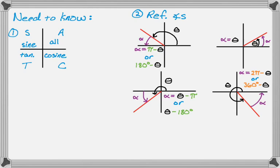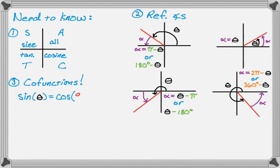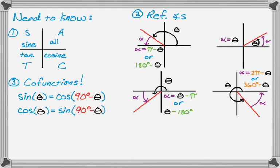So those are the first two things you need to know. Cofunction identities are going to be crucial. The first is that sine of theta equals cosine of 90 minus theta. Or we could use cosine of theta equals sine of 90 minus theta. Either one will work — it just depends on what function you want to compare.